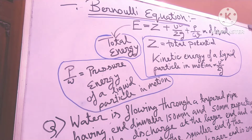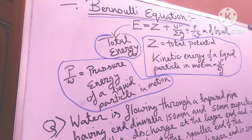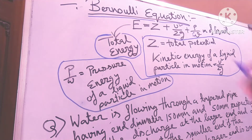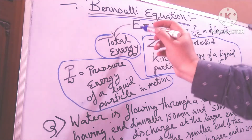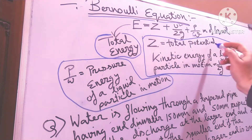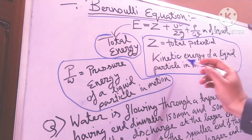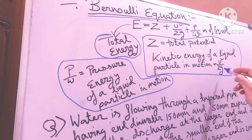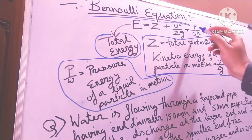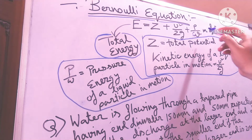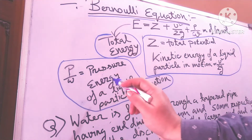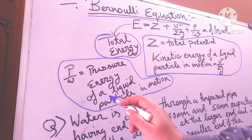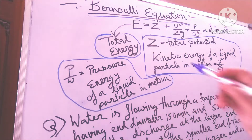Hello dear friends, welcome to my channel. Today's discussion is the Bernoulli equation. This is E for total energy, Z for total potential, kinetic energy of a liquid particle in motion is V squared divided by 2G, and P by W is the pressure energy of a liquid particle in motion.